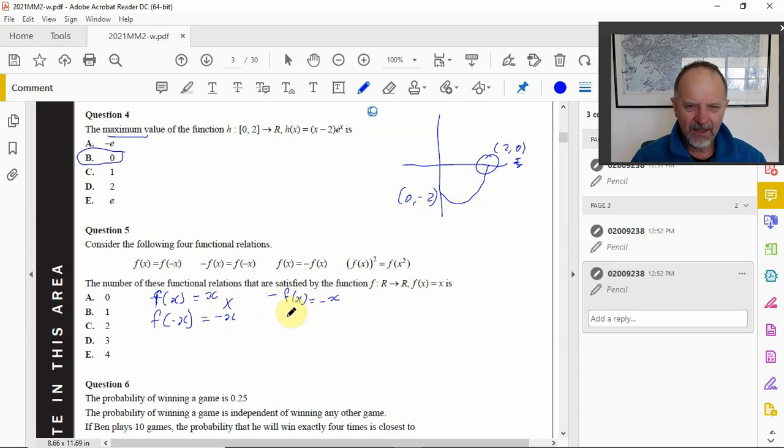The next one: f(x) equals -f(x). f(x) is x and -f(x) is -x, so that one's no good.